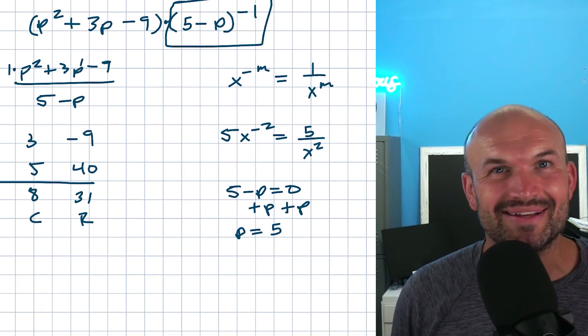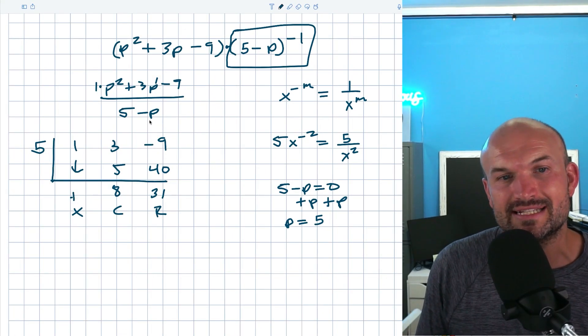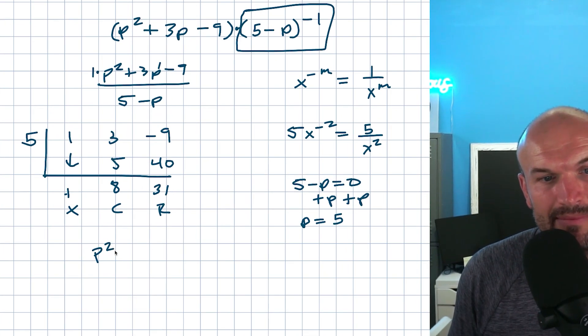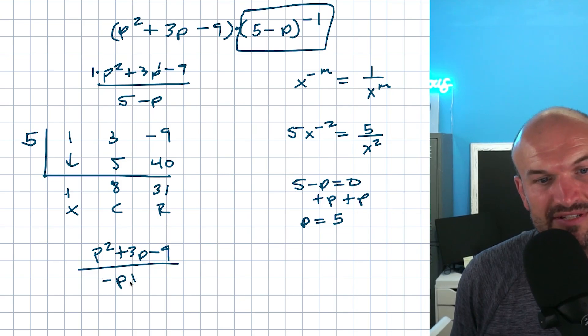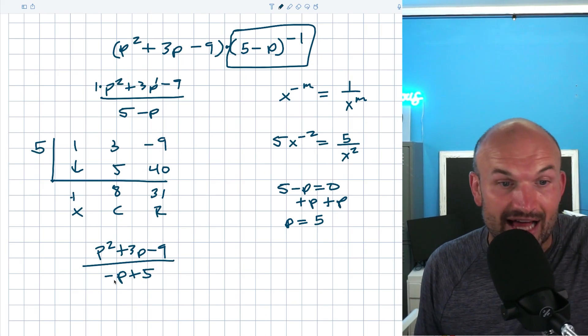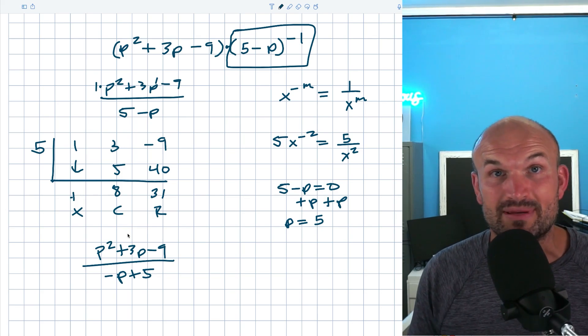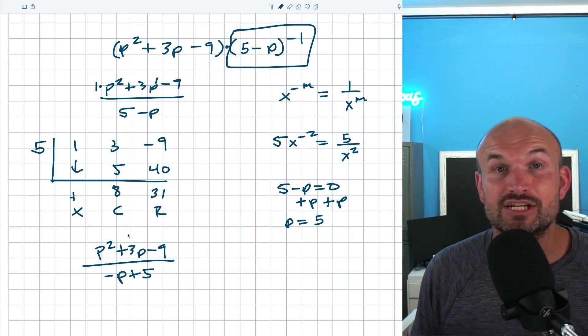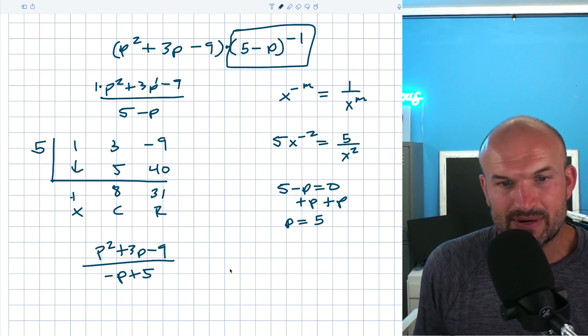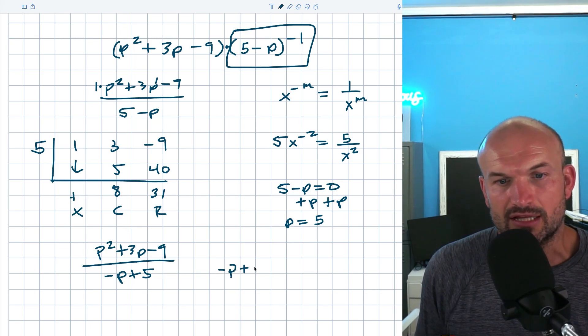But this is the wrong answer. And you might say, wait a minute, how do you know that's the wrong answer? And the reason being is there's a coefficient of our p. See, if I was to go ahead and rewrite this problem as p squared plus 3p minus 9 divided by negative p plus 5, what you would notice is there's a value in front of p, which is negative 1. And if you remember, whenever we have a number in front of p that is not positive 1, that's going to change your quotient.